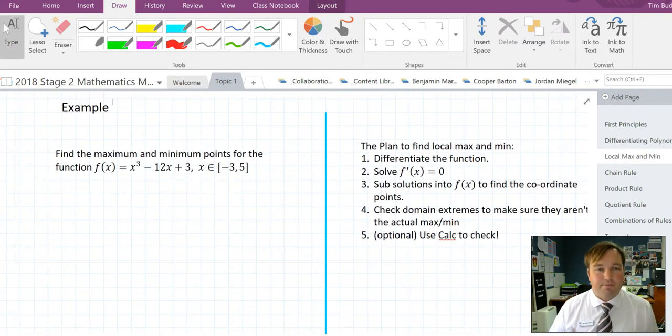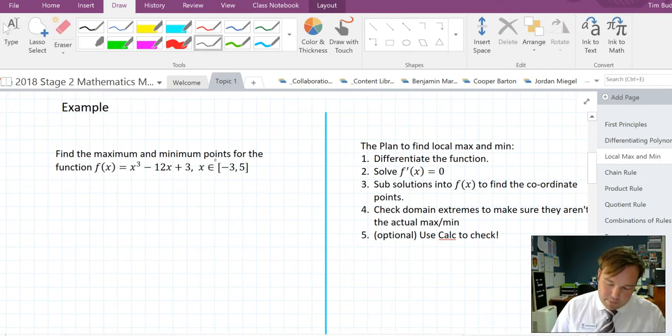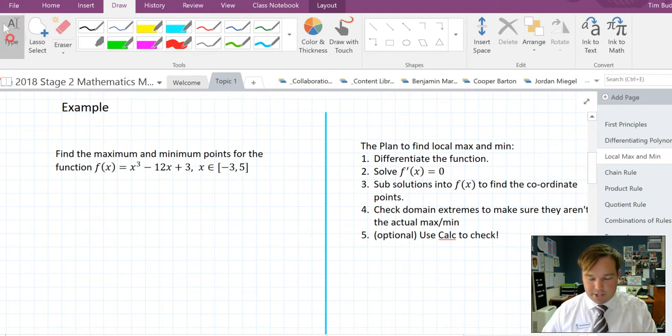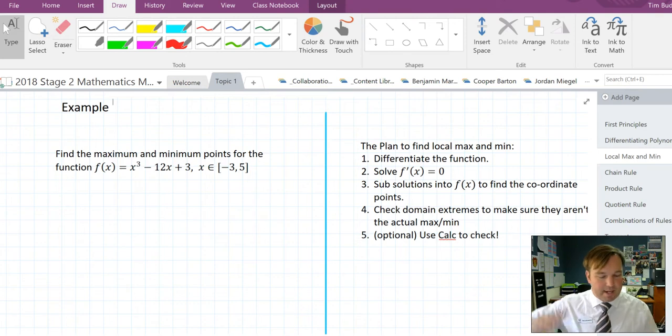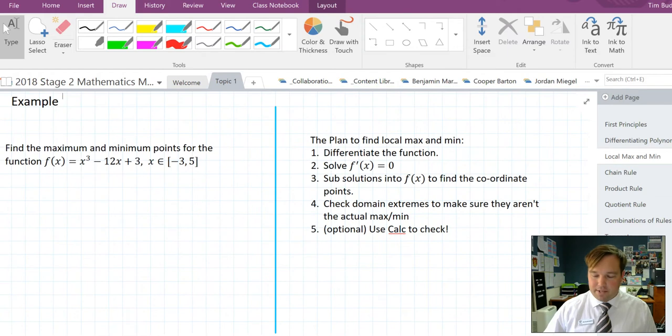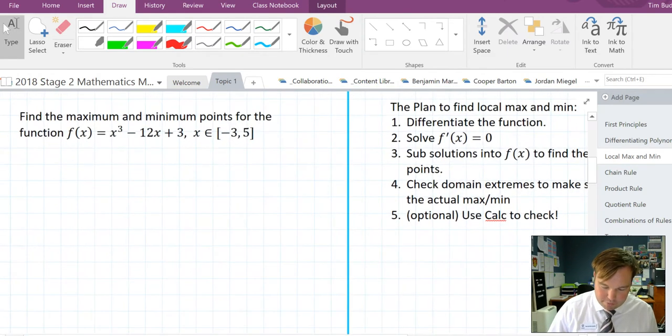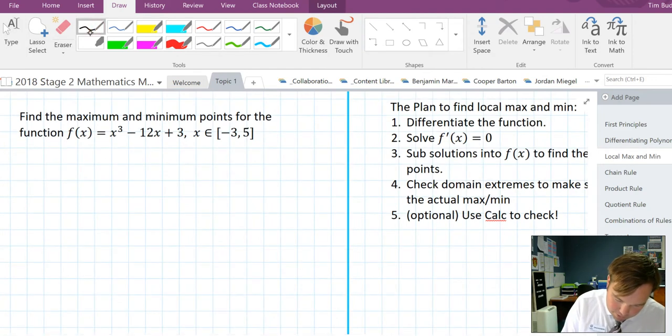Alright, so we're going to do this example. Same as above, so we already know the turning points. But it's asked us to find the local maximum minimum for this function where domain is a part of, or is in a subset of, minus 3 to 5 and the square brackets indicate inclusive. I'm hoping you've seen that sort of domain restriction notation before, but it just means that x is everything from negative 3 up to positive 5. And on the right here is written the general plan. So first of all we're going to differentiate the function.